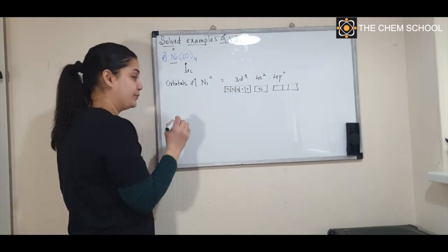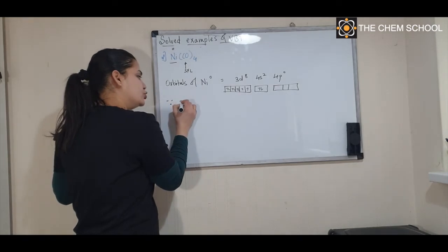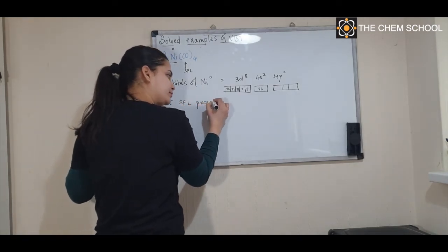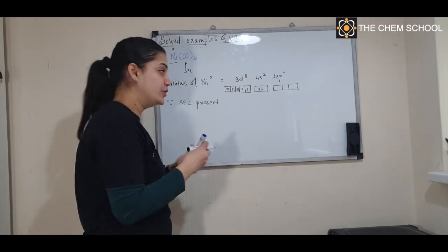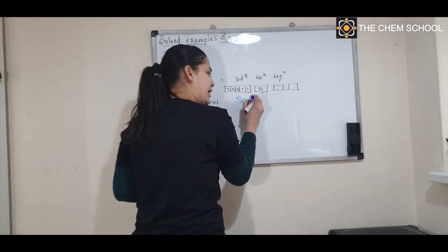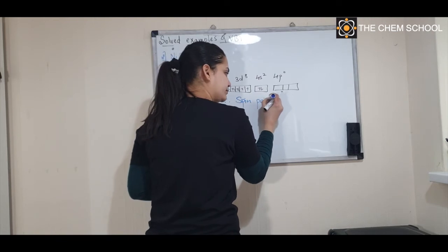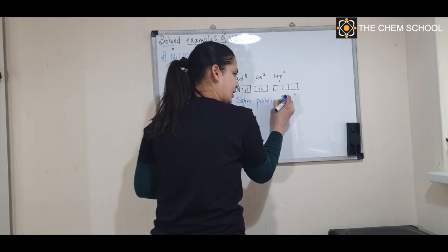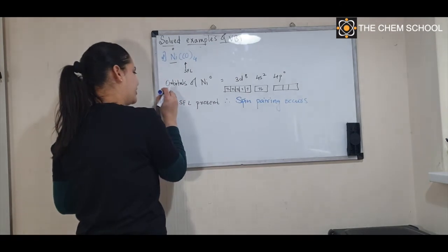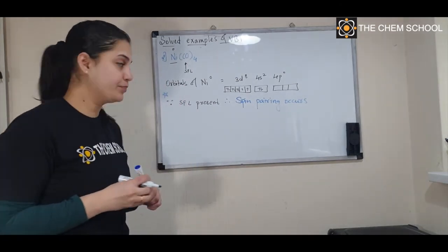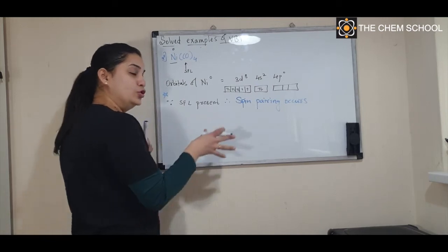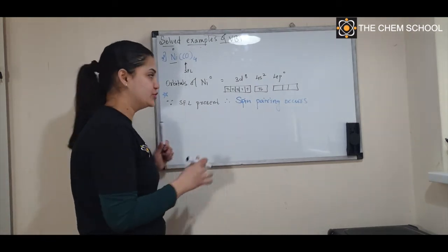Because you have a strong field ligand, spin pairing will happen. First you have to do the spin pairing, since a strong field ligand is present. Therefore spin pairing occurs — this is very important, don't forget this. Do the spin pairing first, then do the hybridization.